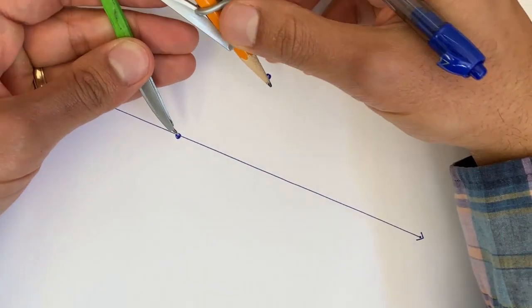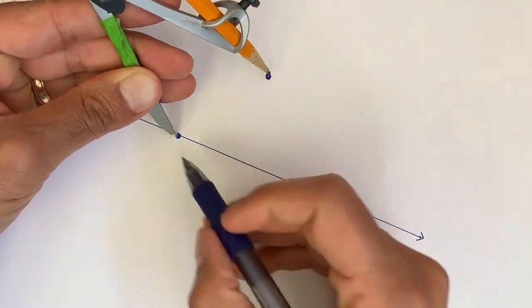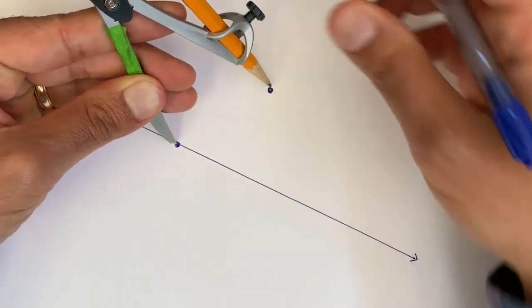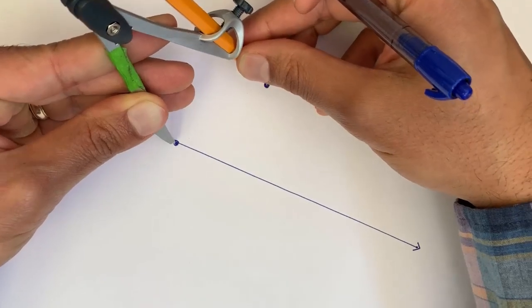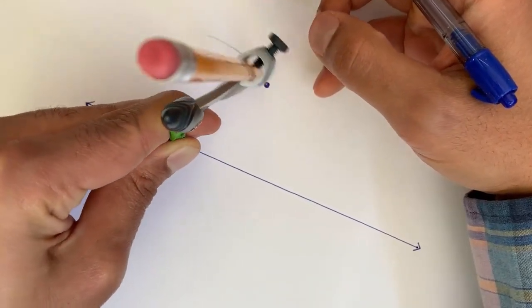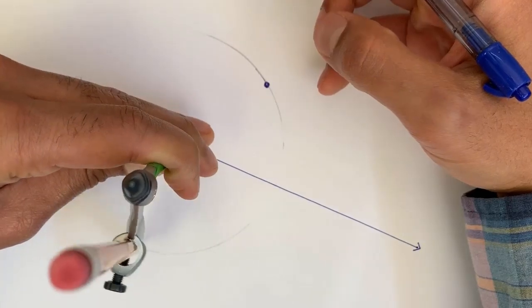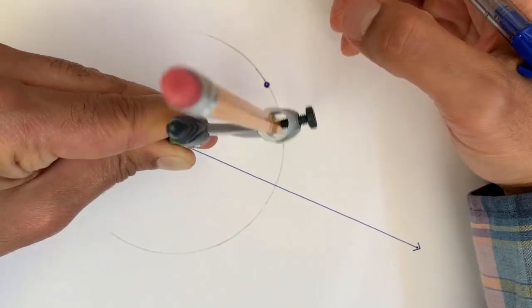And then I'll adjust my compass so the distance between the pivot point and my pencil tip is the same as the distance between those two points. And then I can now use my compass to trace out an arc of that radius. So there you go.